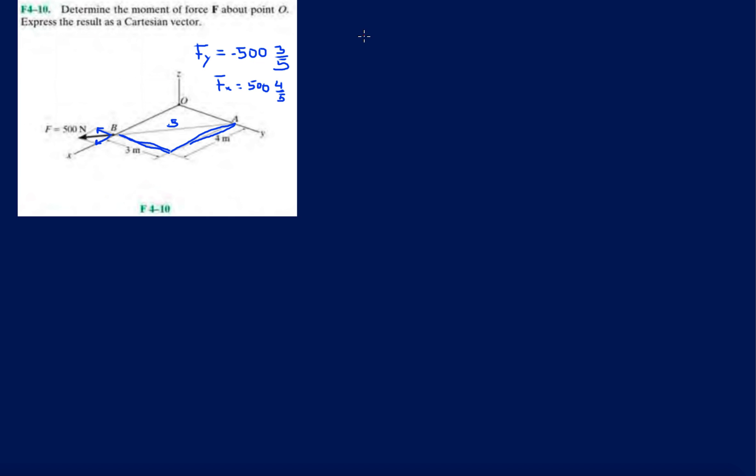Now let's write our force in Cartesian form. So F is going to be, let's see, 500 times 4 divided by 5, so it's 400 in the i direction, then minus 300 in the j, and then 0 in the k. We probably can just ignore this one.